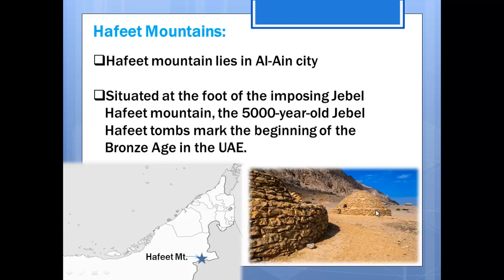This actually marks the beginning of the Bronze Age in the UAE, and we will see why that is so. What you see on the left is the location of the Hafeet Mountain on a UAE map. If you are asked to locate the archaeological site of Hafeet Mountains, this is where it goes.